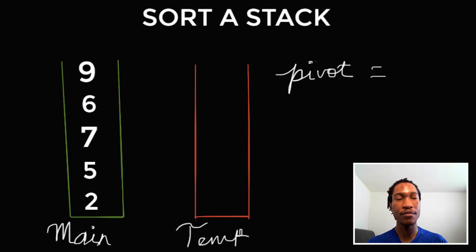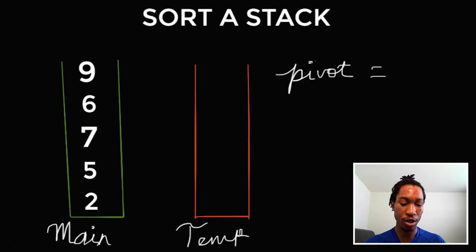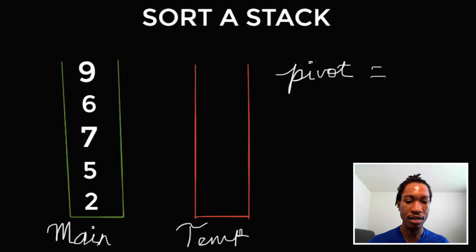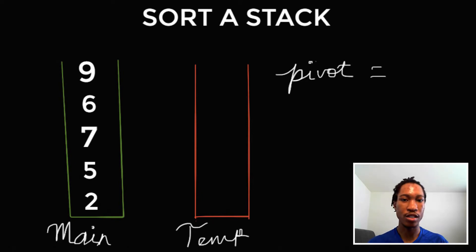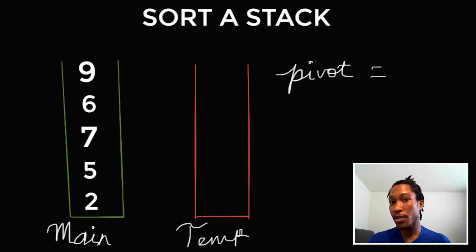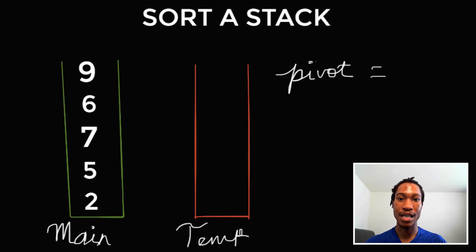This question wants us to sort a stack without using any other data structure, which makes it incredibly more difficult. If they allowed us to use another data structure, of course you can pop the elements out of the stack, put them into an array, use array's sort, and then push them back into the stack. But this question doesn't want us to do that.